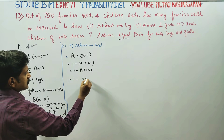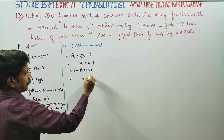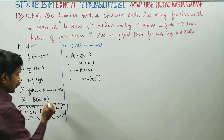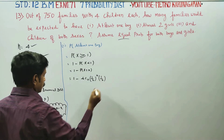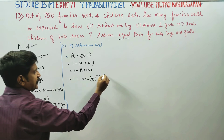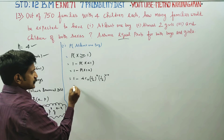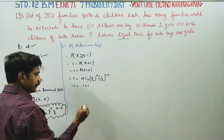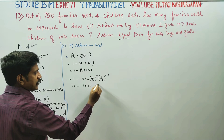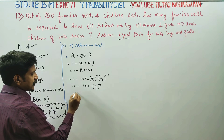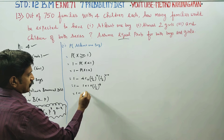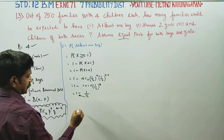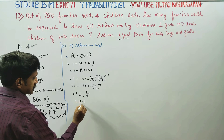P(X = 0) = 4C0 · (1/2)^0 · (1/2)^(4−0). Anything to the power 0 is 1, so this becomes 1 × (1/2)^4 = 1/16. Therefore, 1 minus 1/16, taking LCM of 16, gives 16 minus 1 by 16.